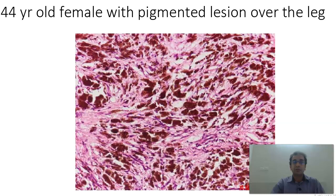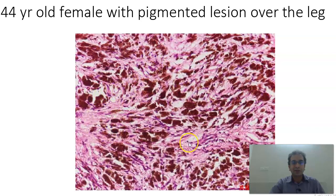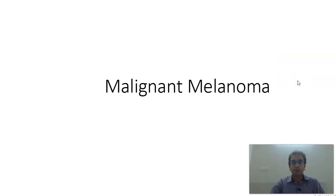The history is a 44-year-old female with a pigmented lesion over the leg. What you find here is that there are cells rich in melanin pigment. You are not able to make out the nucleus here, but if you were to see the nucleus, it would be a nice eosinophilic prominent nuclei. These cells are infiltrating everywhere — they are not very organized, they are moving here and there. So for the MBBS level, this is a malignant melanoma.